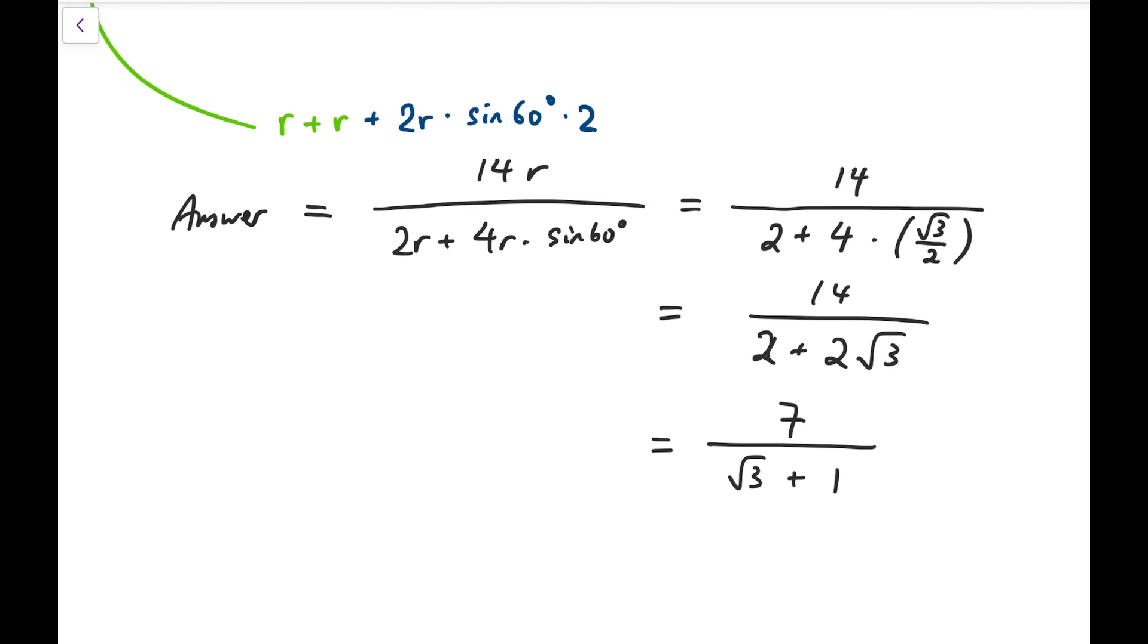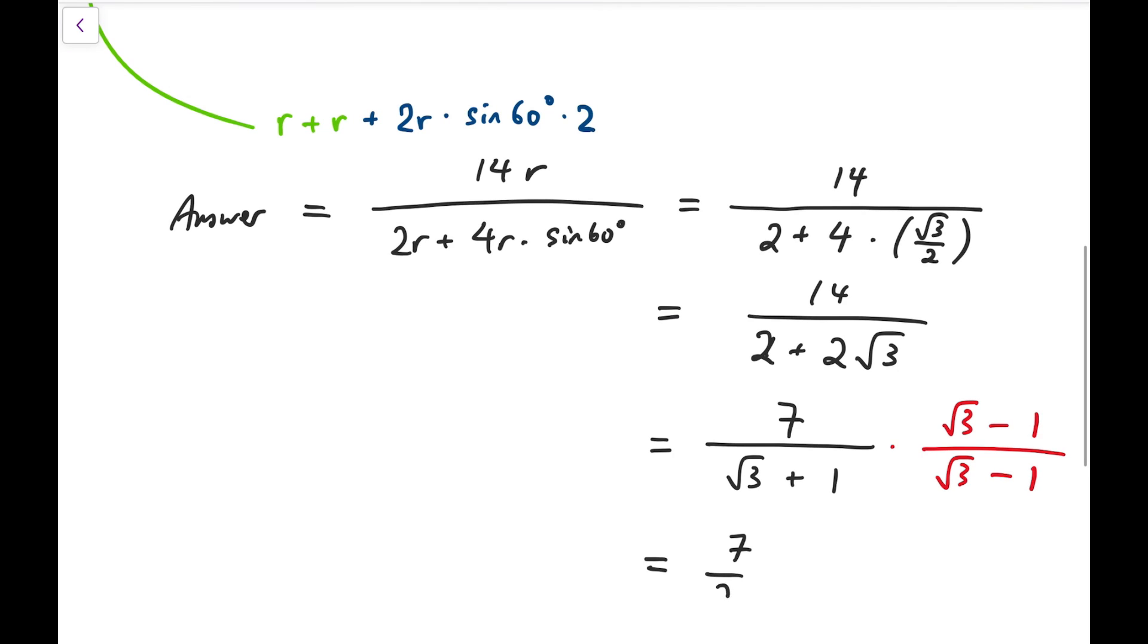To further simplify, I'm going to multiply the fraction by root 3 minus 1 over root 3 minus 1 so that there is no root at the denominator. And at last we have 7 over 2, that's the product of the denominator, multiplied by root 3 minus 1. And this is the final answer.